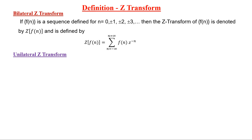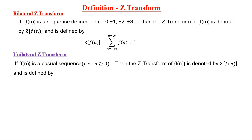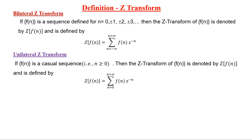The next one is the unilateral Z-transform. This means if the sequence f(n) is a causal sequence, that is n is greater than or equal to 0, then the Z-transform of the sequence f(n) is denoted Z{f(n)} and is defined by Z{f(n)} equals the summation from n equals 0 to infinity of f(n)·z^(−n).